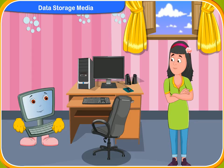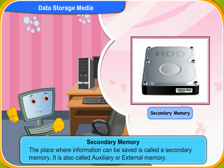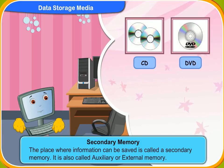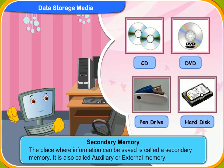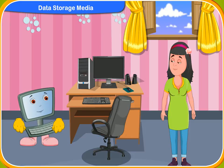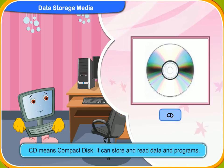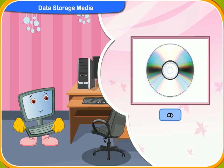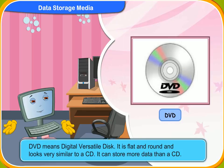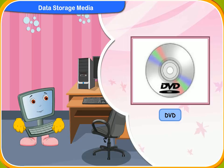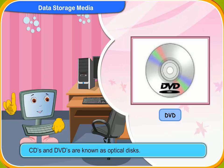But what is secondary memory? The place where information can be saved is called secondary memory. It is also called auxiliary or external memory. CDs, DVDs, pen drives and hard disks are examples of secondary memory. CD means compact disk — it can store and read data and programs. DVD means digital versatile disk. It is flat and round and looks very similar to a CD, but it can store more data than a CD. CDs and DVDs are known as optical disks.